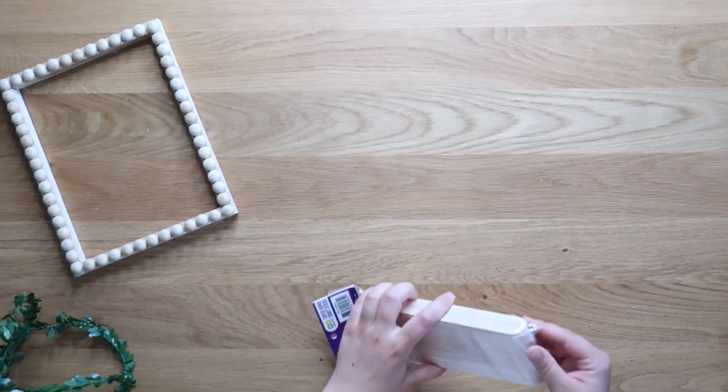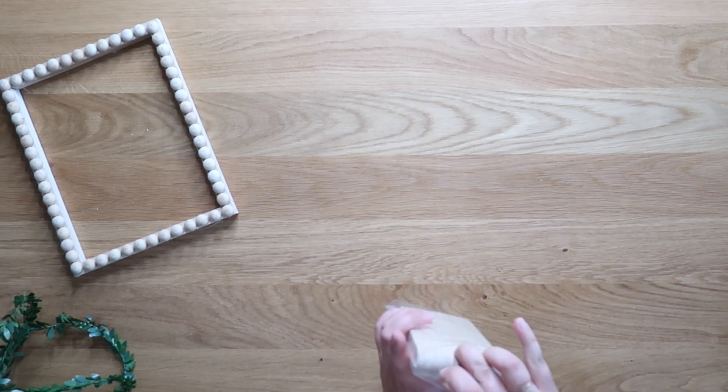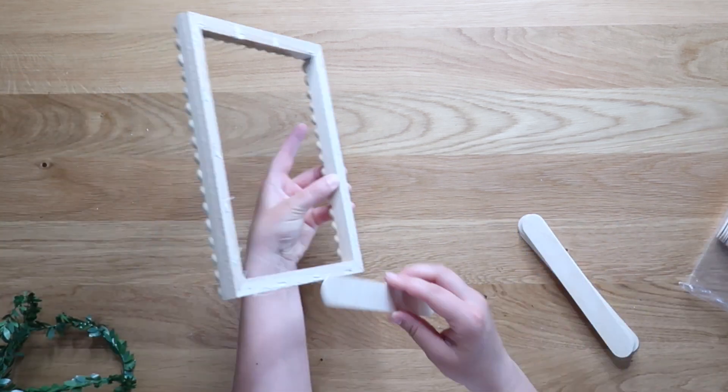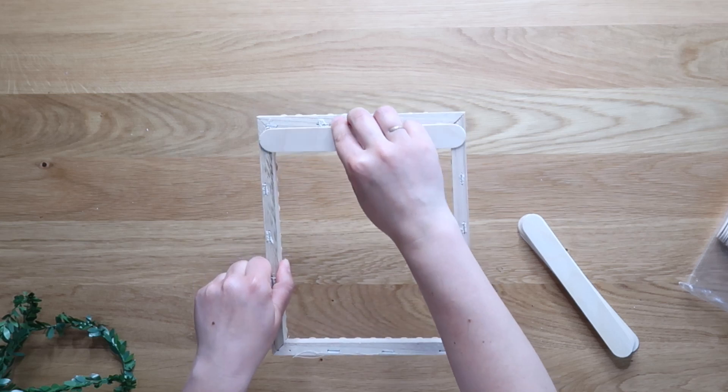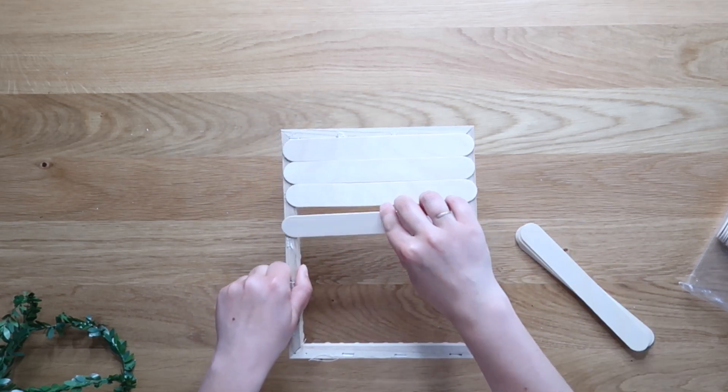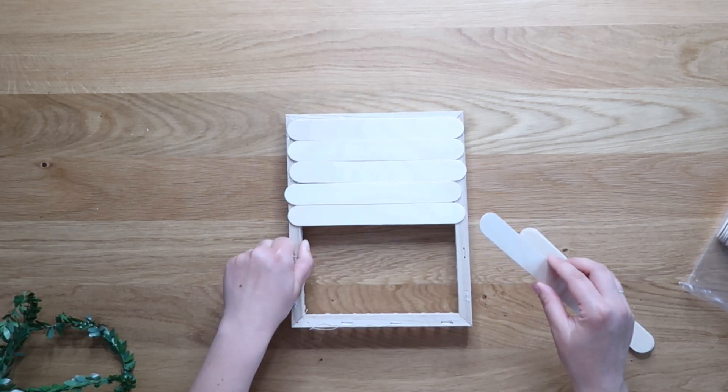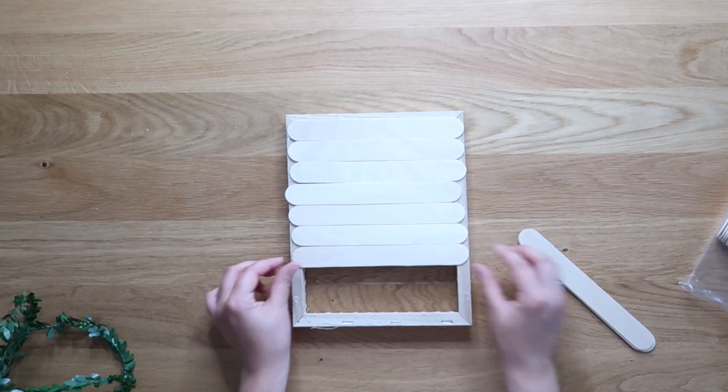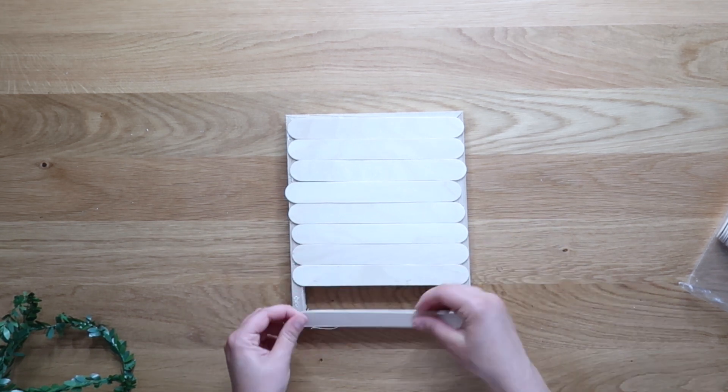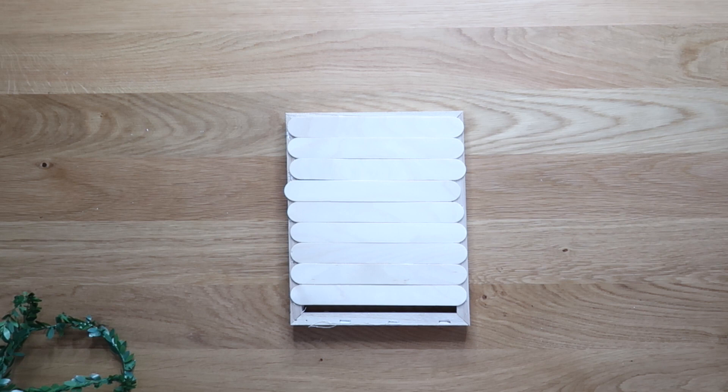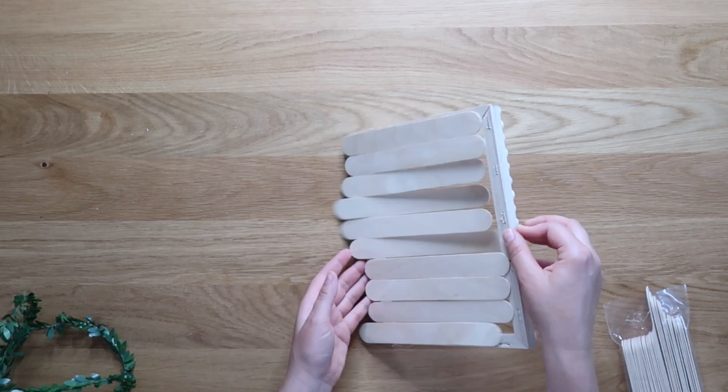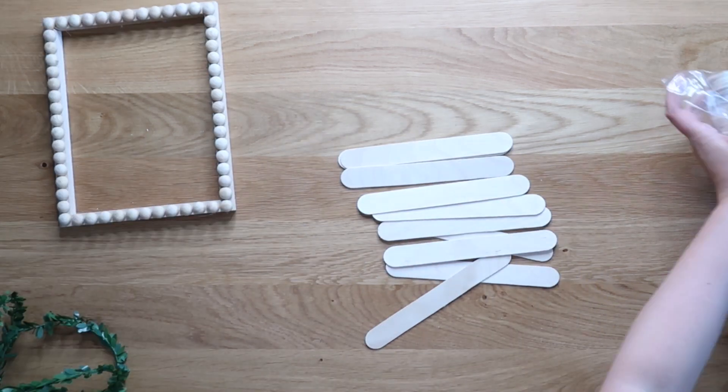And then once you have everything glued down, just set that aside for the wood glue to dry. And while that's drying, pull out some jumbo wooden craft sticks. I've seen these at Hobby Lobby. These ones I think I got at Walmart. But you want the jumbo kind so that they extend all the way across the back of that wooden frame. And then I just kind of placed them on the back to see how many I would need.